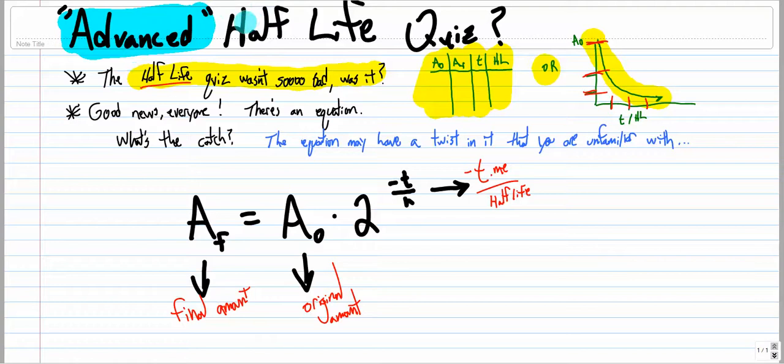Why is it easier than the half-life quiz? Well, it's easier because there is an equation that will solve the five problems on this quiz. And what does the equation look like? It says the final amount equals the original amount times two to the negative time over half-life power.